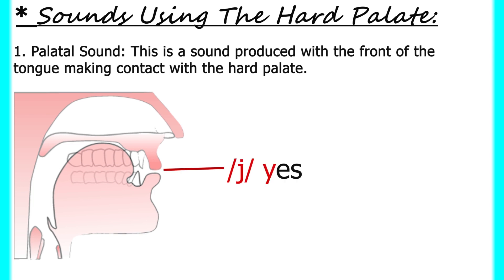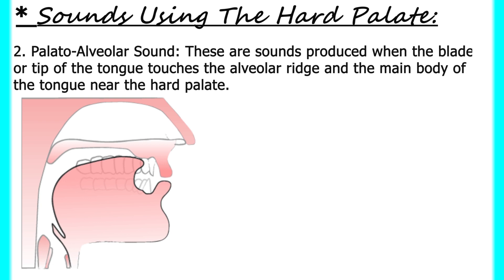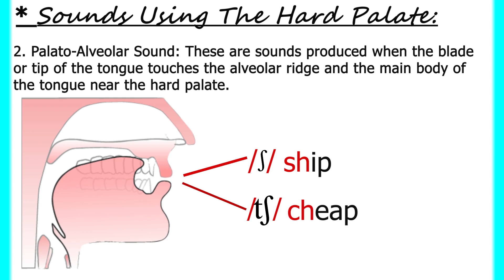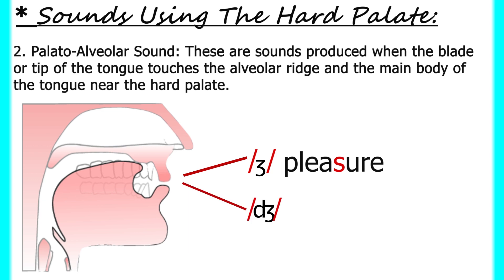When the blade or tip of the tongue approaches or touches the alveolar ridge and the main body of the tongue nears the hard palate, the sounds produced are called palatal-alveolar sounds. These include the SH sound as in 'ship,' the CH sound as in 'cheap,' and also in SH as in 'pleasure,' and J as in 'jug.'